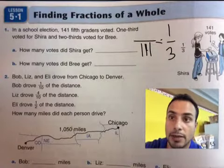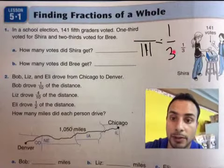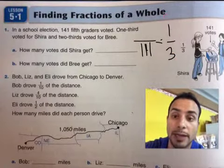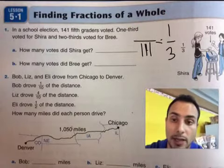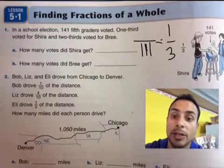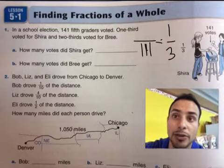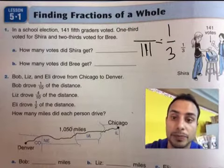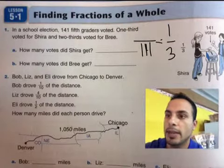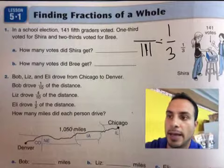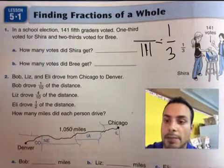Again, divide 141 by 3. That gives you the number you must multiply the 1 into to get one-third. Then multiply that number times 2 so you have two-thirds. I hope that makes sense, boys and girls. Go ahead and answer A and B.